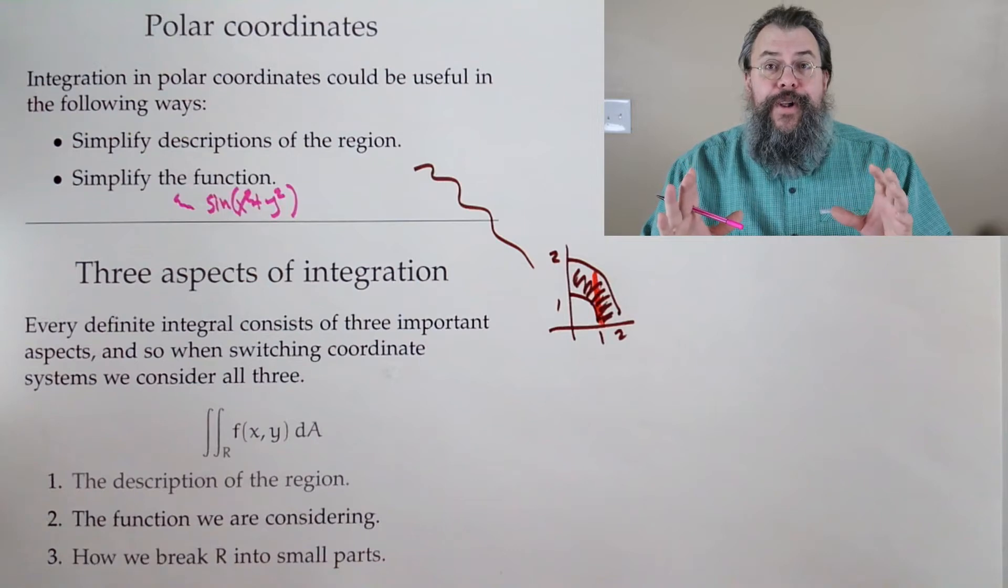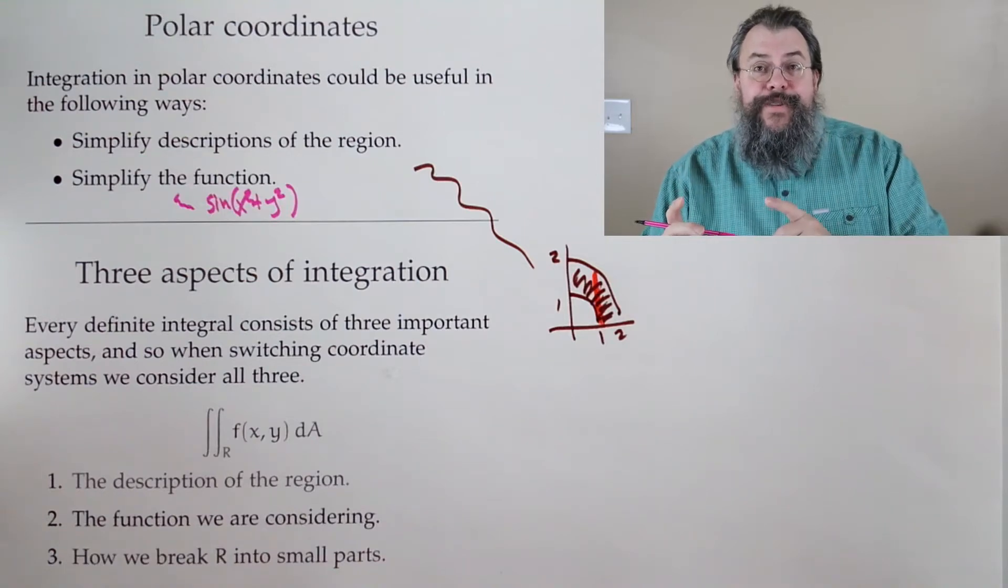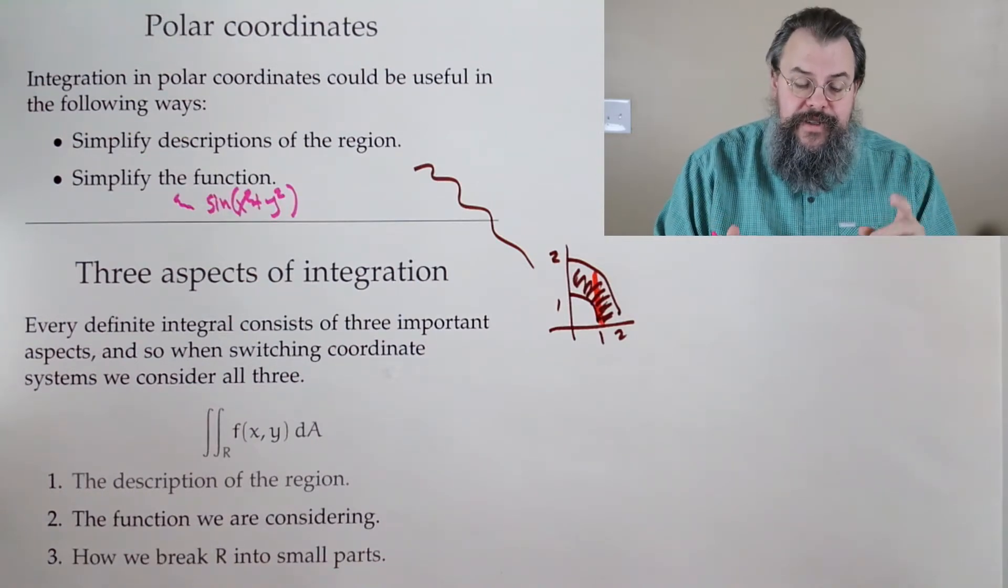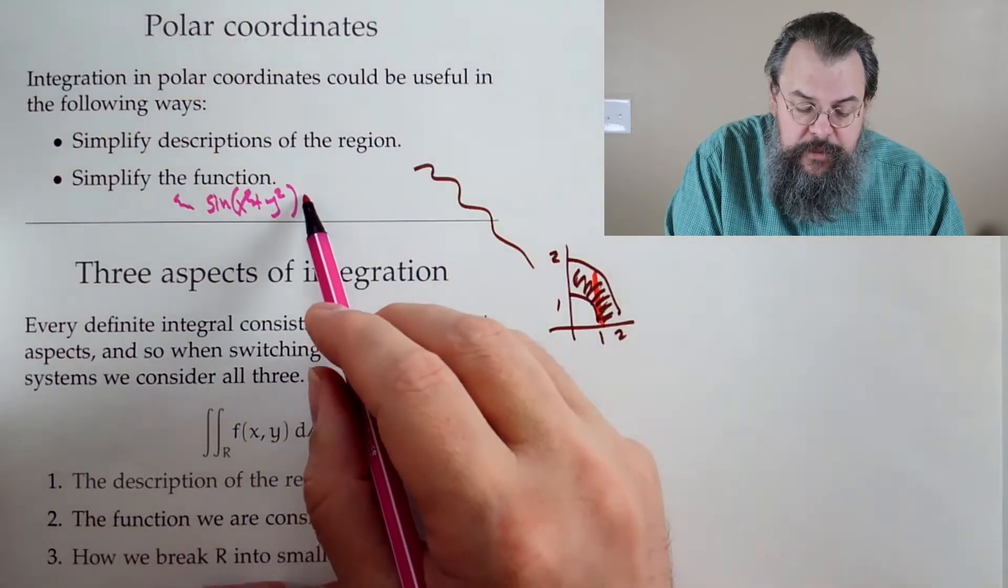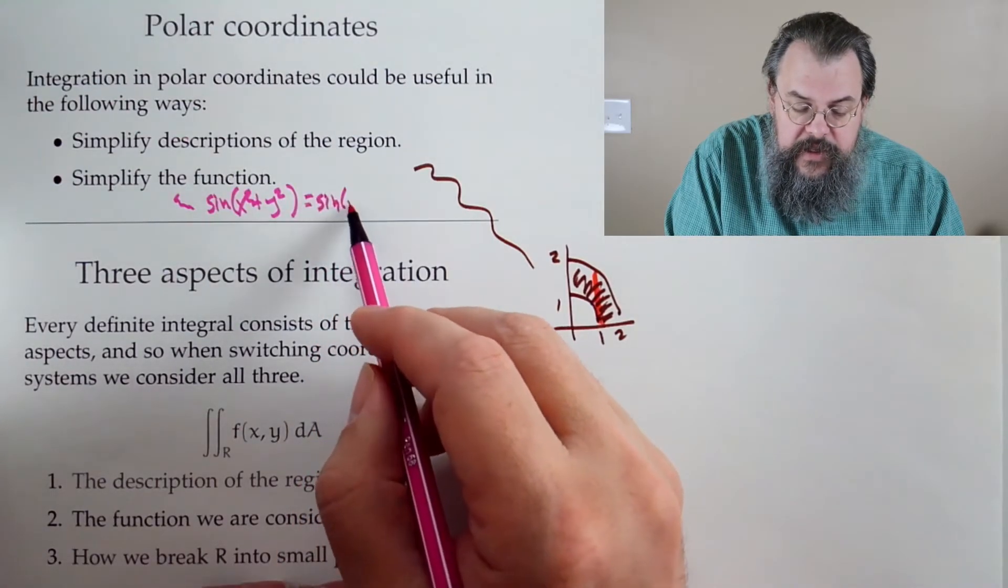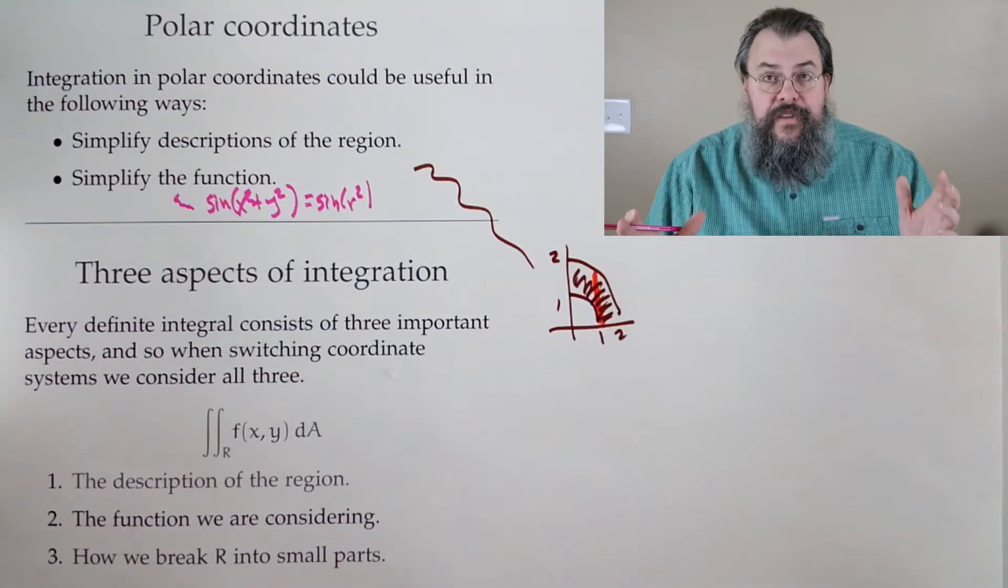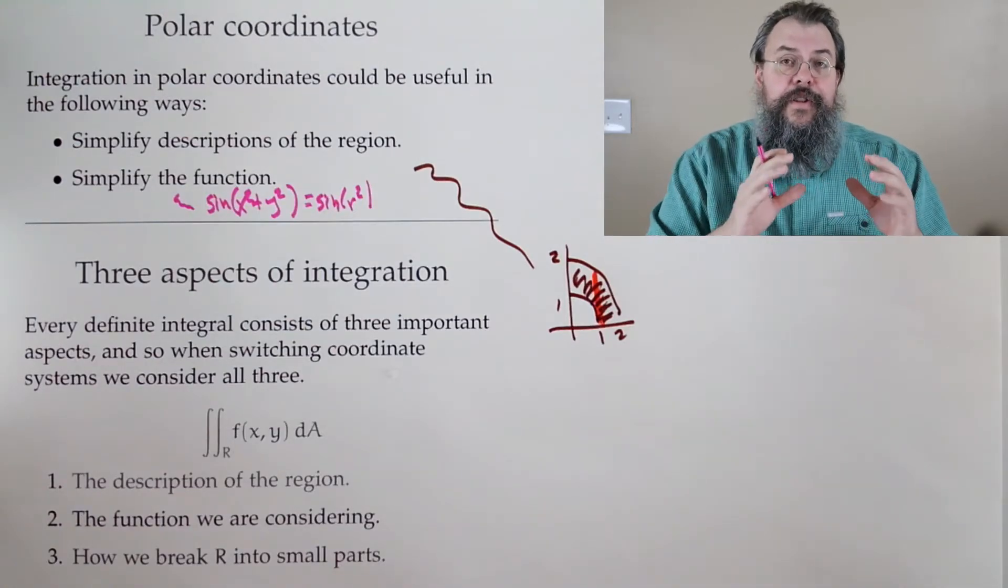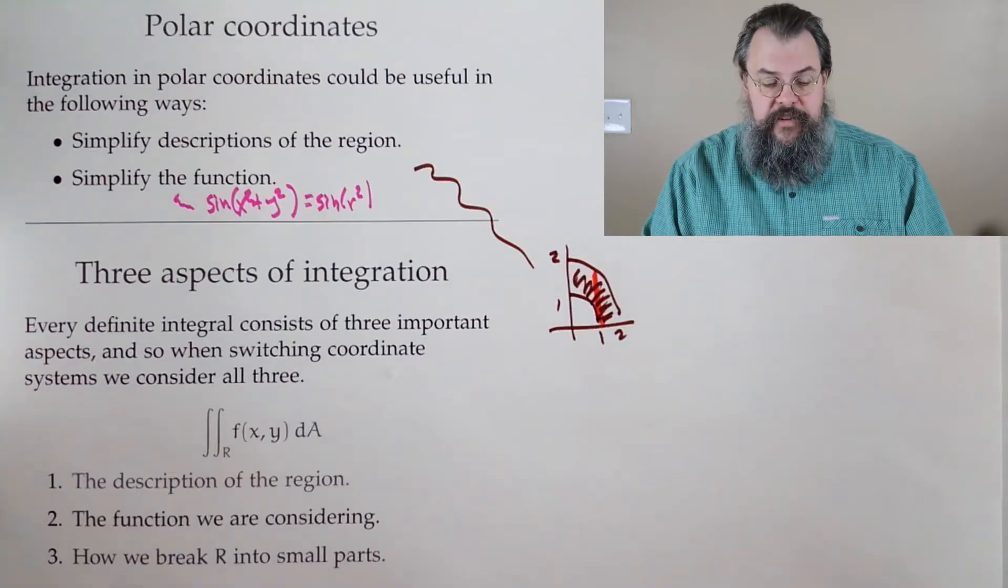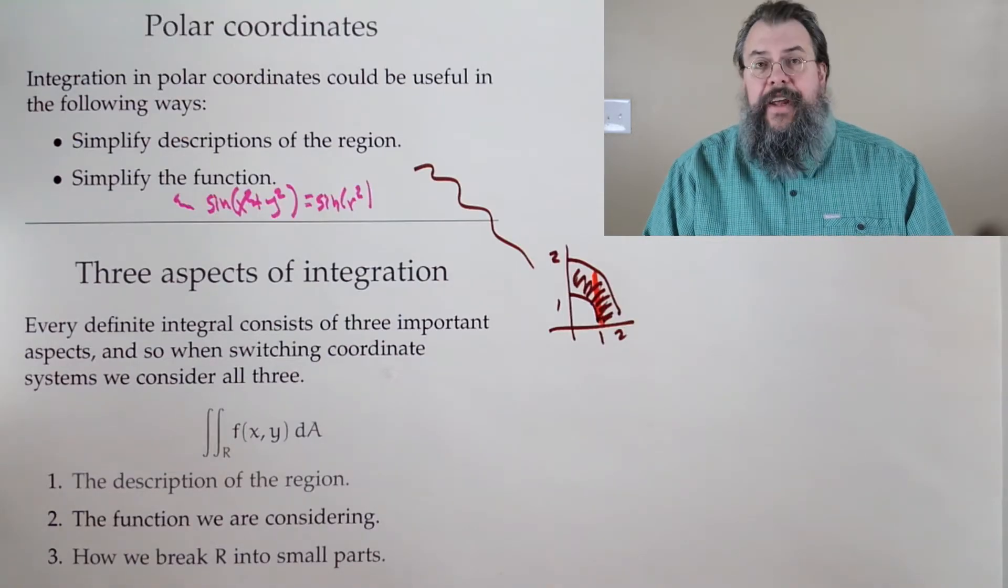Well, it's x squared plus y squared on the inside. We say, well, wait. Polar x squared plus y squared simplifies. And this could become simply sine of r squared. And that's a little bit easier. Now, I'm not saying it's easy, but it's easier. We're on the road to making progress and simplifying.